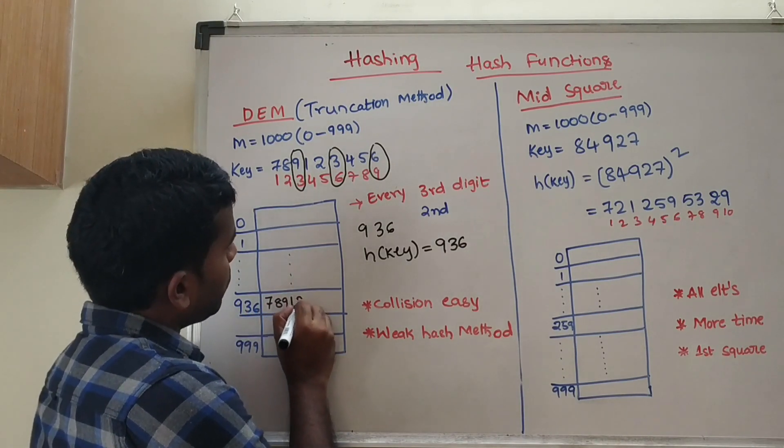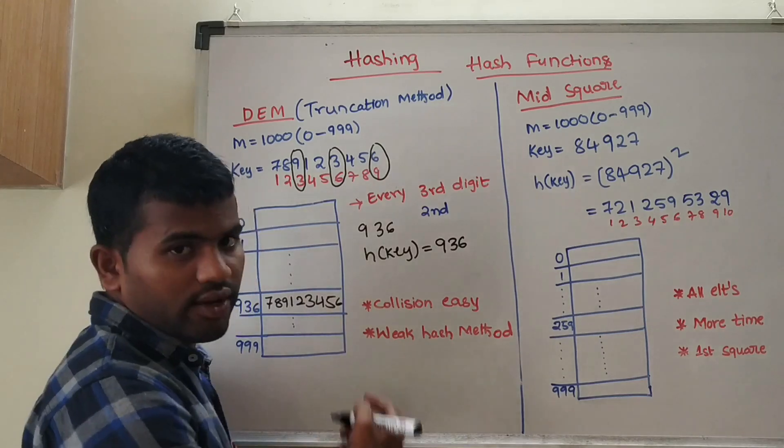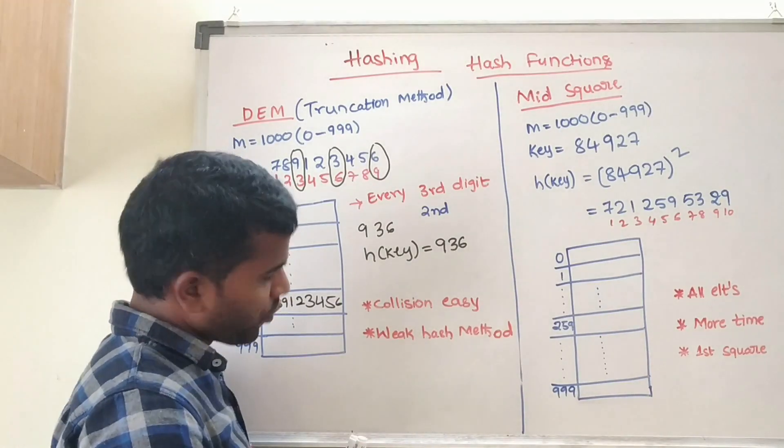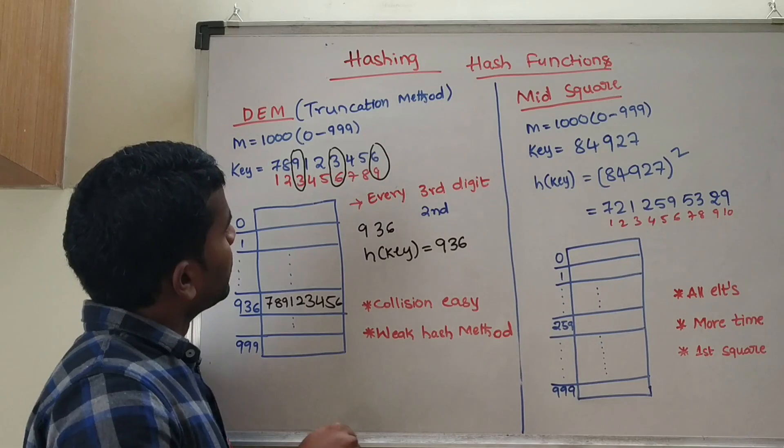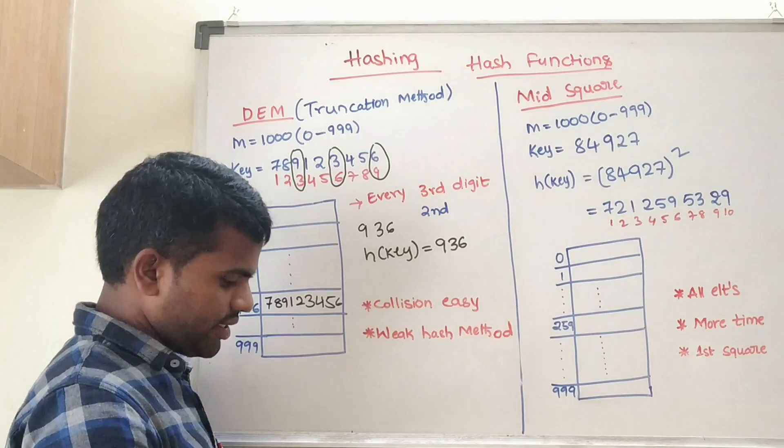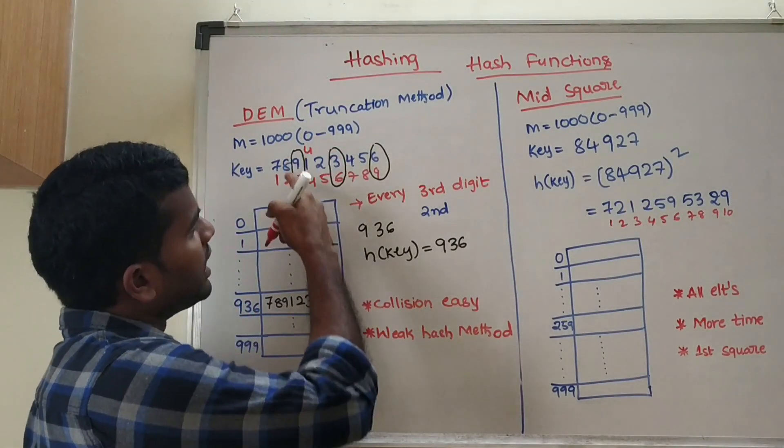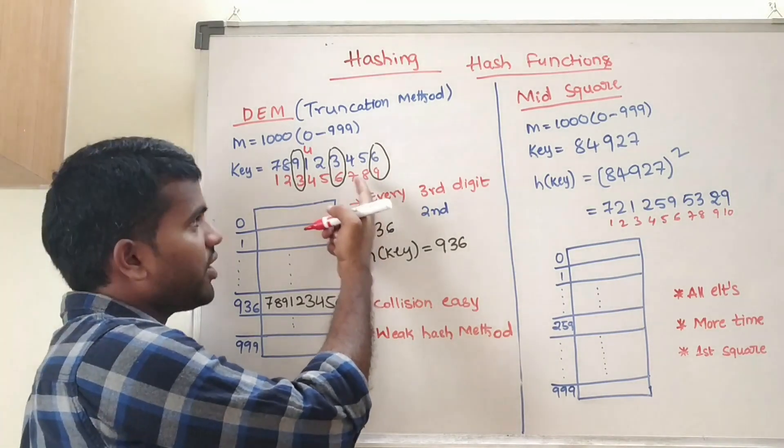This is a very weak method. Why? Because you are fixing these three values same as is, and you are changing one number. If you put four here, the entire key is changed but your collision is happening.